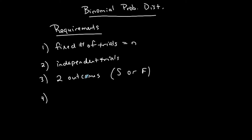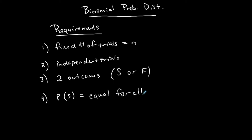For example, if your two outcomes are heads or tails and you want the probability of tails, then success is tails and failure is heads. If you want the probability of heads, then success is heads and failure is tails. The last requirement is that the probability of success is equal for all trials — it stays constant.